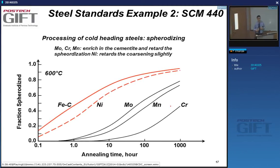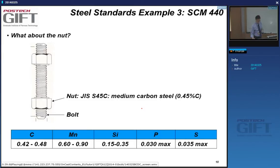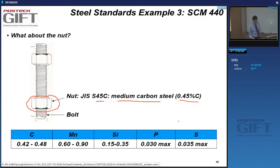Spheroidizing takes a long time — for iron carbon it can take 100 hours, a few days. If the material is alloyed with nickel, moly, or chrome, it takes even longer. The nut is made with medium carbon steel without chrome or moly, not the same steel as the bolt.